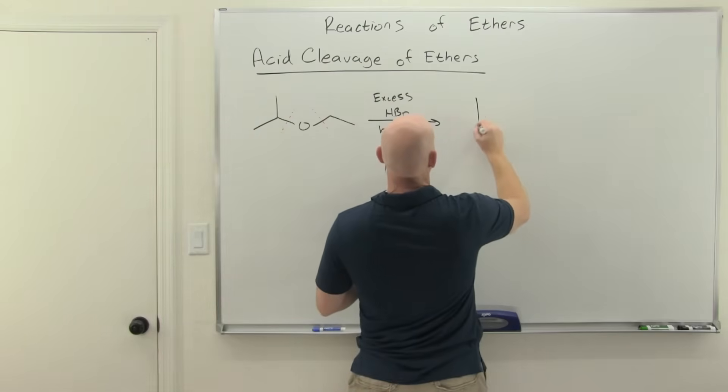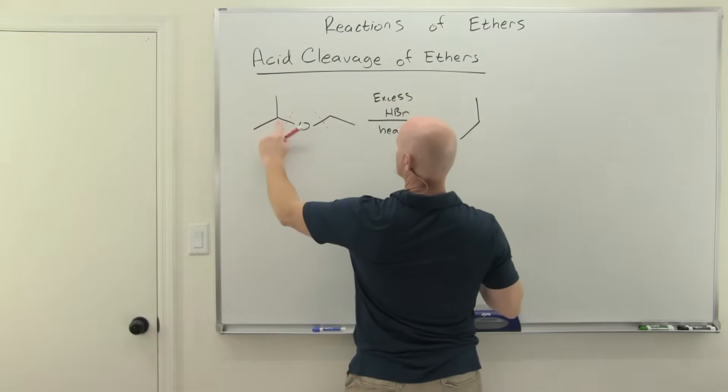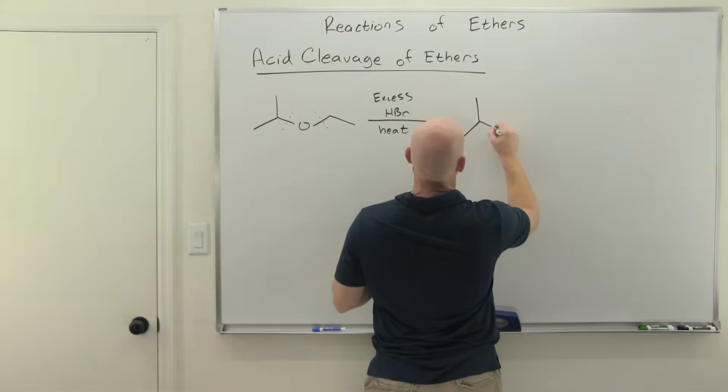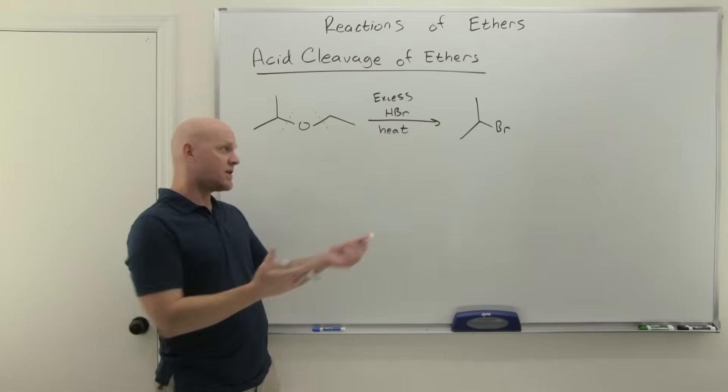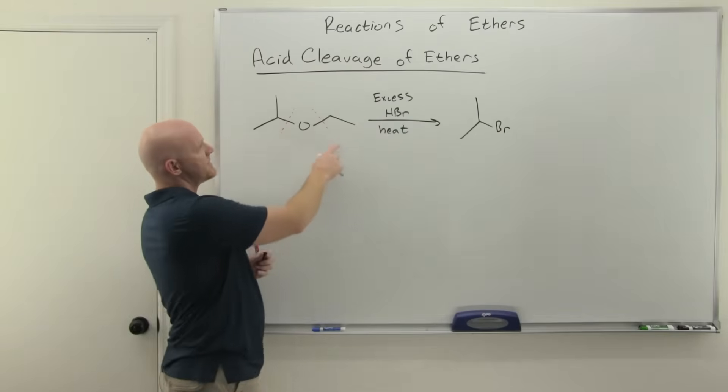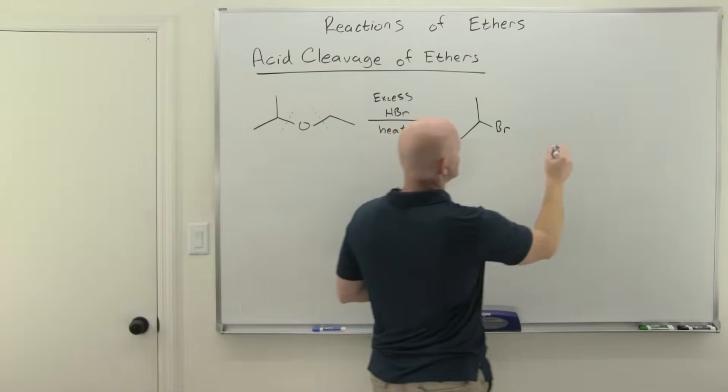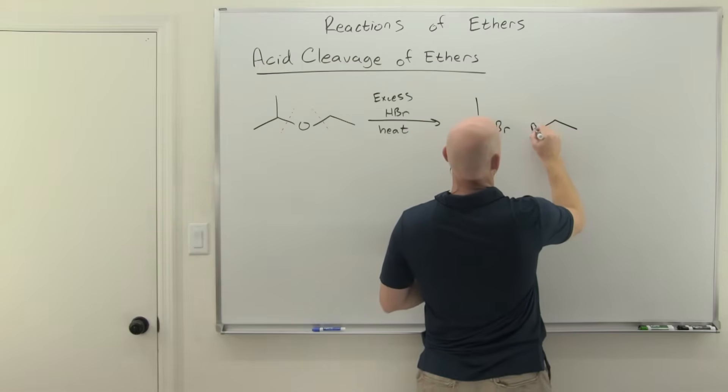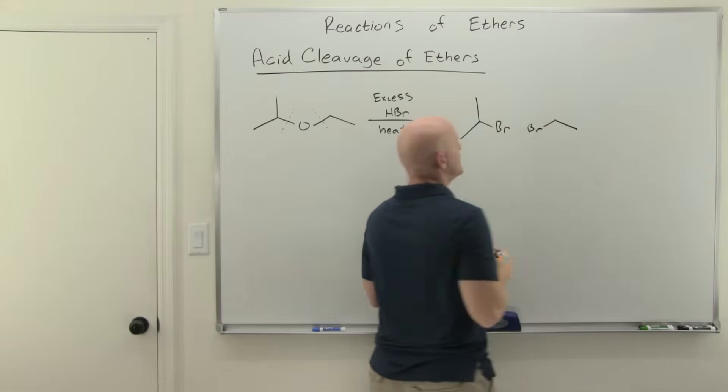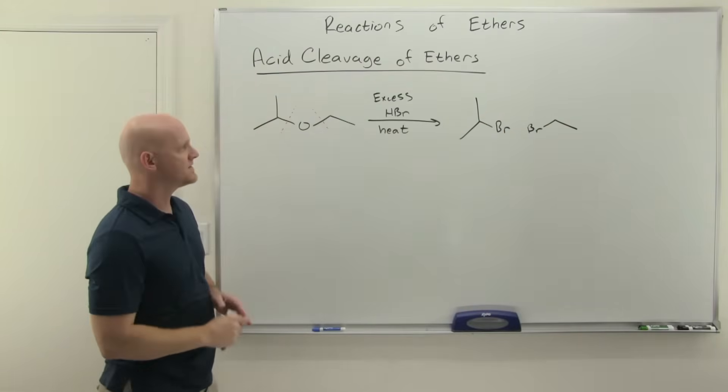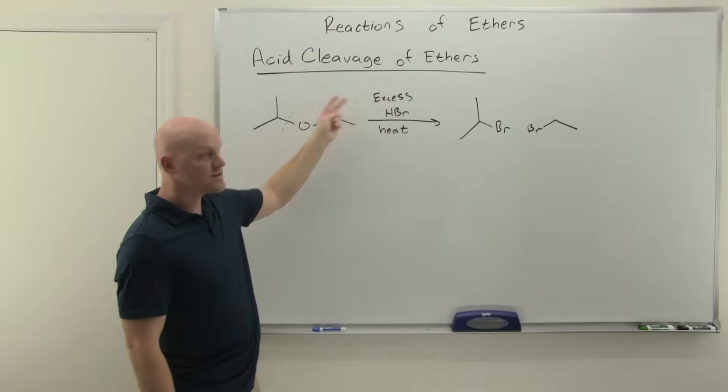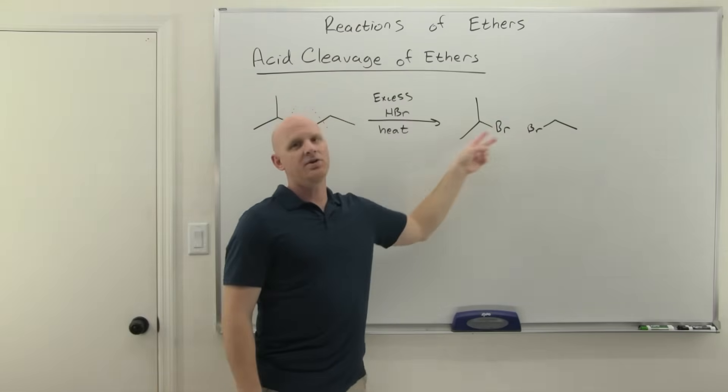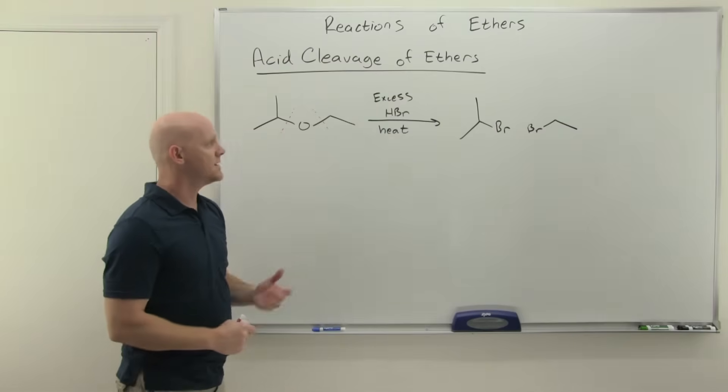Ultimately, you end up breaking the carbon-oxygen bonds. On one side, we'd end up with these three carbons bonded to the halogen of your acid—if you use HCl, that's chlorine; HBr, bromine; HI, iodine. Same thing on the other side with the two carbon chain. You end up with two alkyl halides, so with excess HBr you get two alkyl bromides.